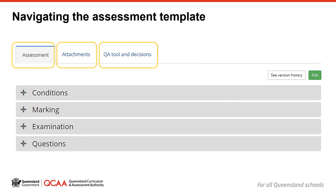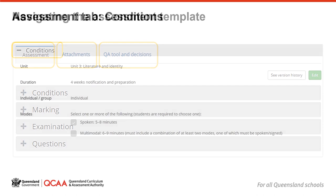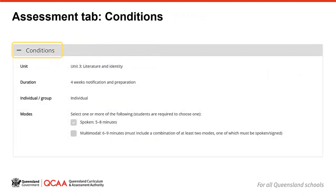To develop the assessment instrument, there are three tabs for you to work in: Assessment, Attachments, and QA Tool and Decisions. Under the Assessment tab, you will see an accordion called Conditions. Clicking on the plus will expand the accordion. To reduce it, click on the minus.